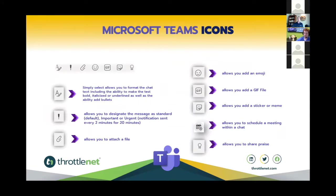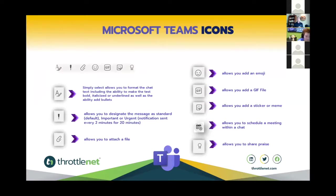When you pull up a chat, you'll see a row of icons at the bottom. The format icon lets you add bullets, bold, italicize, and more. The exclamation point sets urgency level: standard, important, or urgent. With 'urgent,' a notification is sent roughly every two minutes for 20 minutes until the recipient engages. The paperclip attaches files from OneDrive or your PC, and you can also use drag and drop.